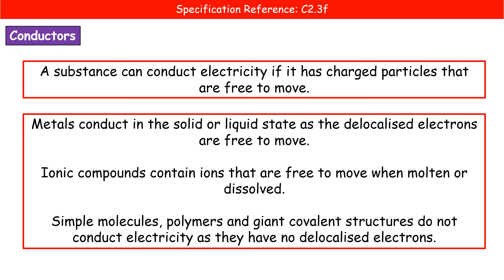For ionic compounds, where we've got positive and negative ions held together within a structure, as a solid they will not conduct because the ions are not free to move. However, if we dissolve them or make them molten, we will have ions that are free to move and therefore it will conduct electricity. So solid ionic compounds cannot conduct; molten or dissolved ionic compounds can conduct because the ions can move.